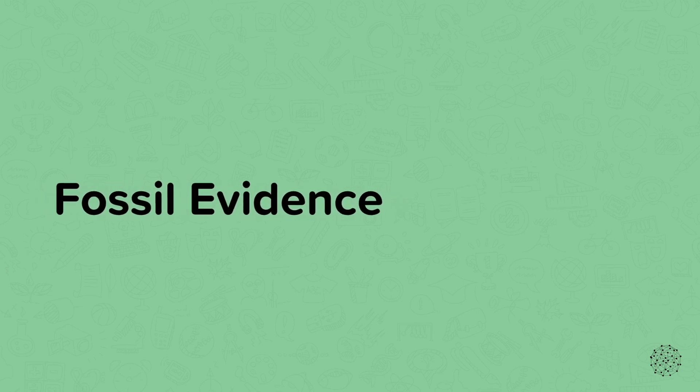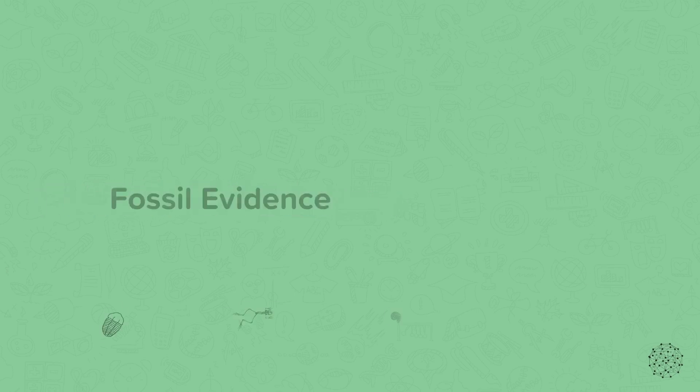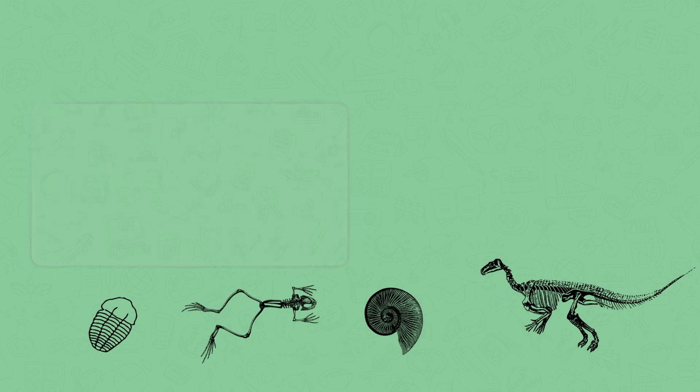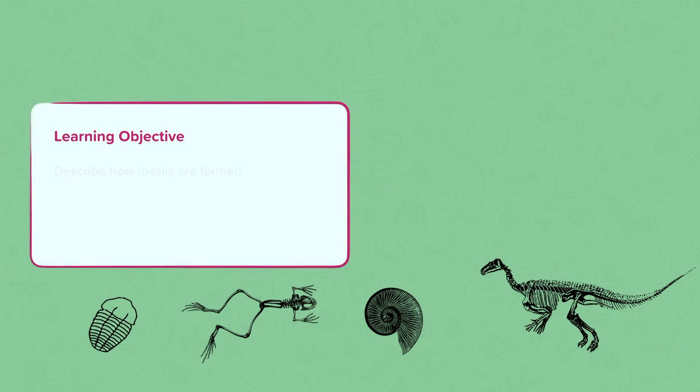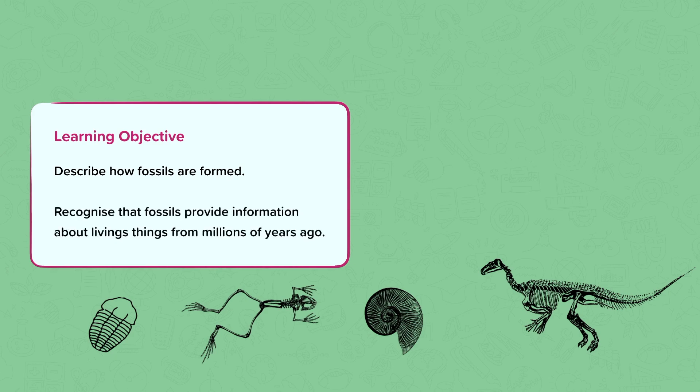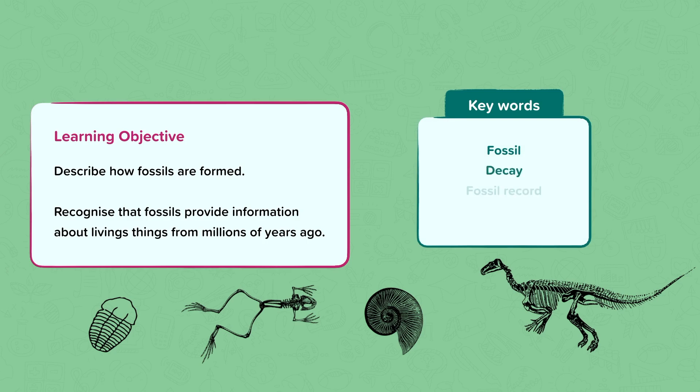This nugget's about fossil evidence. In this nugget, we're going to go back over how fossils are formed, and then we're going to look at what information they give us and how that helps us understand what living things were like millions of years ago. The keywords we'll use include fossil, decay, fossil record, and evolution.